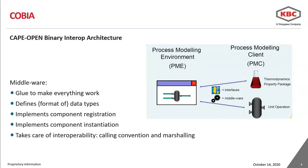Middleware defines the format of data types, implements component registration and instantiation, and takes care of interoperability, calling conventions, and marshalling. In the past, CAPE-OPEN had adopted two middlewares: COM and CORBA. COM has pretty much been the standard until a couple of years ago when the new middleware COBIA was introduced. COBIA stands for CAPE-OPEN Binary Interaction Architecture.